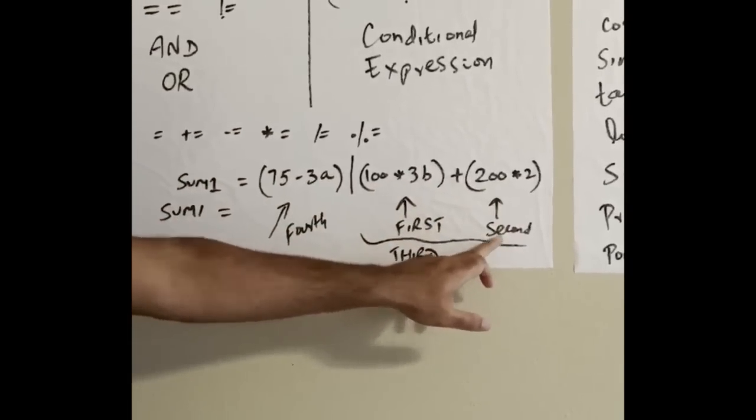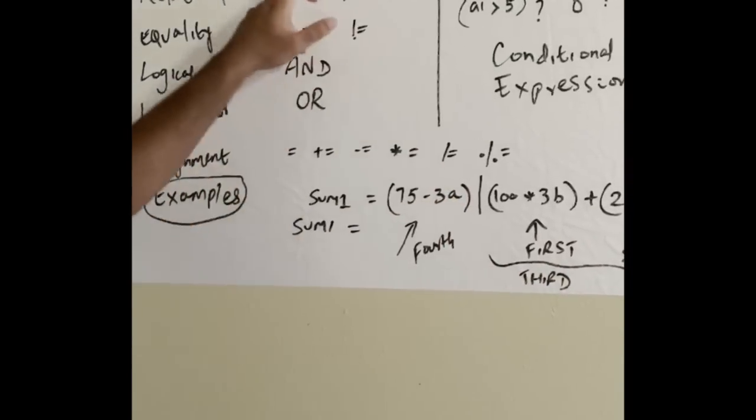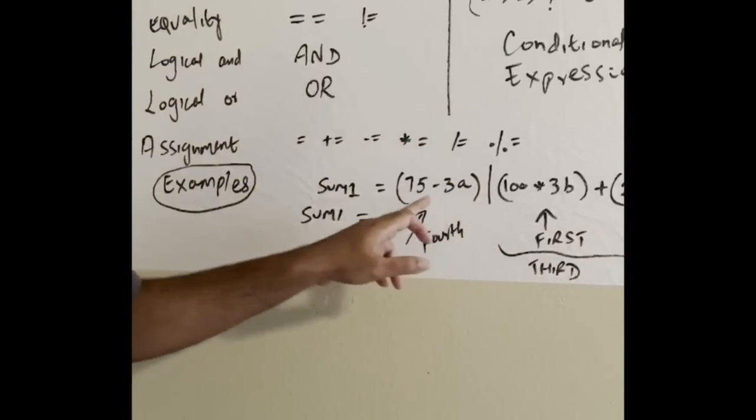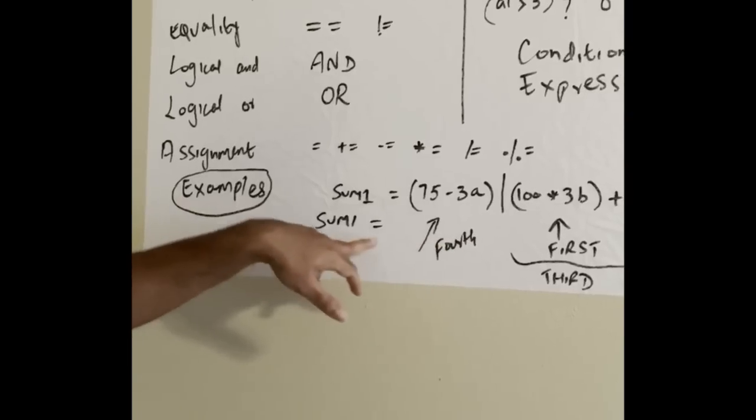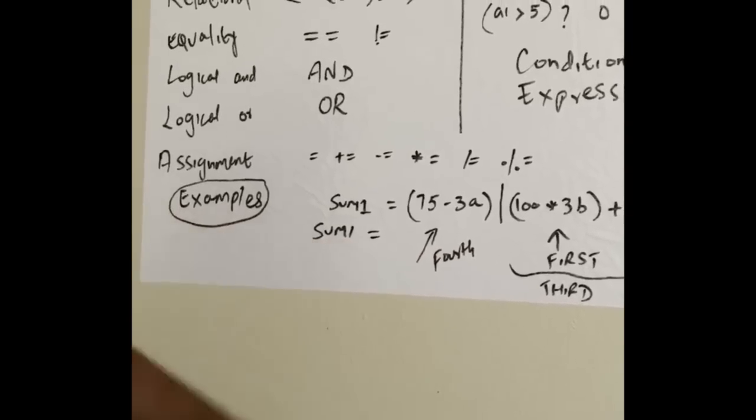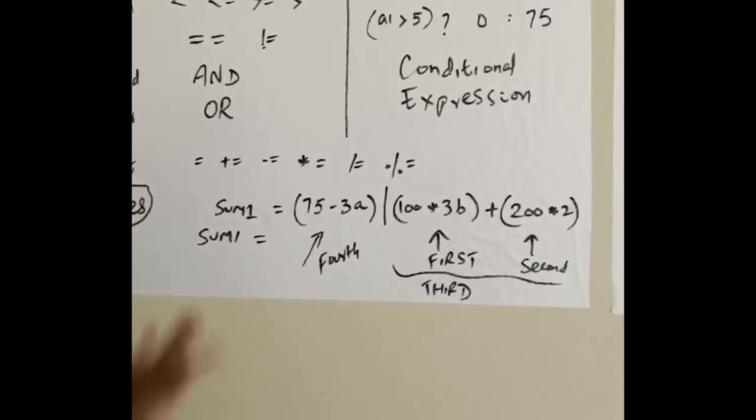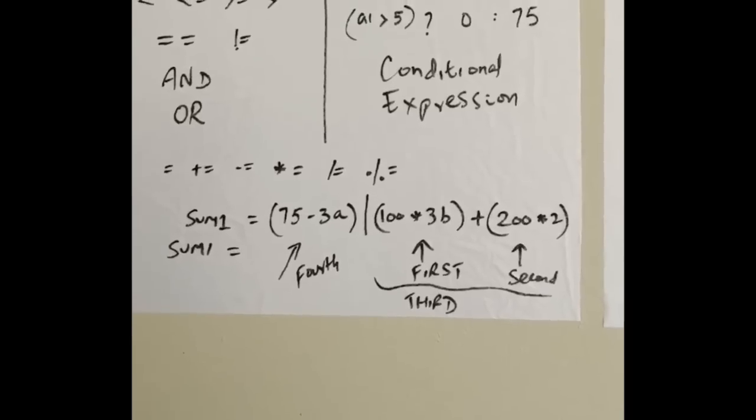Fourth is the minus. Finally sum will have the value. This is all about operator precedence. Next lesson we will go into C library functions.